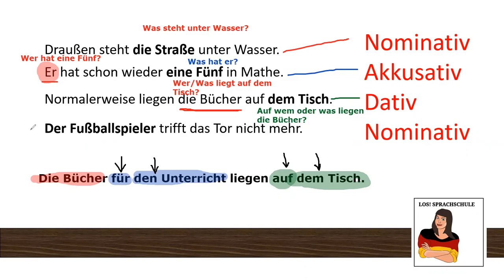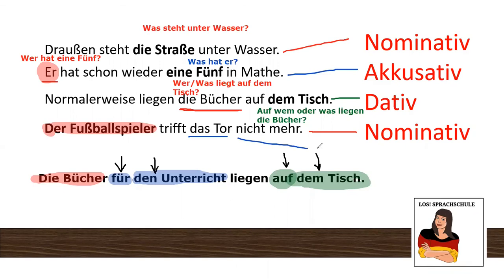And the last example: 'Der Fußballspieler trifft das Tor nicht mehr' — the football player does not hit the goal anymore. Of course the who part, the subject, the topic, the nominative is 'der Fußballspieler' — he is the person doing something, or not in this case. And just so we know: 'das Tor' ist accusative. 'Wen oder was trifft der Fußballspieler nicht mehr?' — whom or what does the player not hit anymore? The goal. So this is accusative.